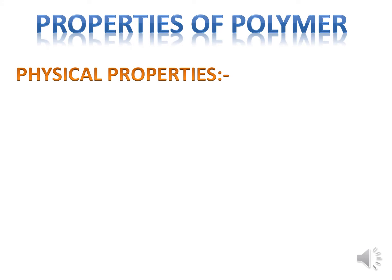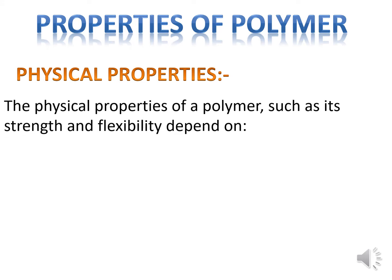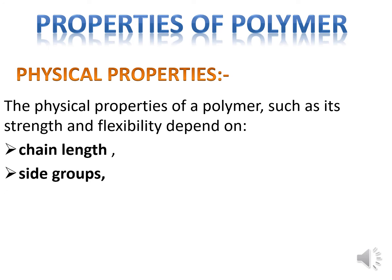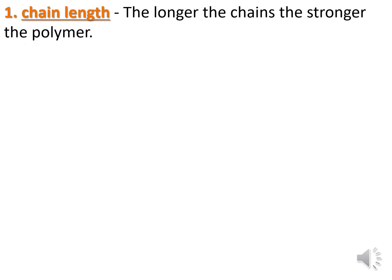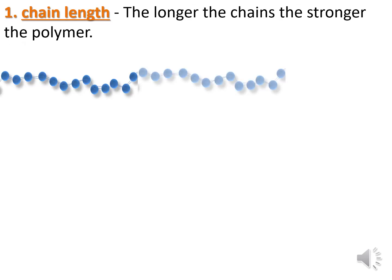Properties of polymer. Physical properties: The physical properties of a polymer, such as its strength and flexibility, depend on chain length, side groups, branches, and cross-links. First, chain length — the longer the chains, the stronger the polymer.